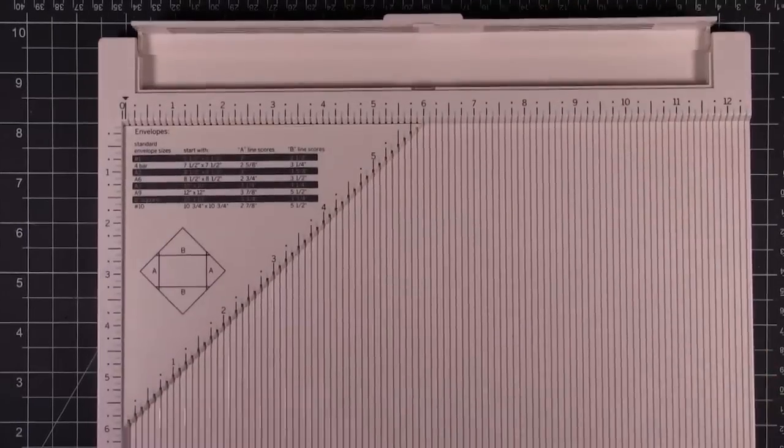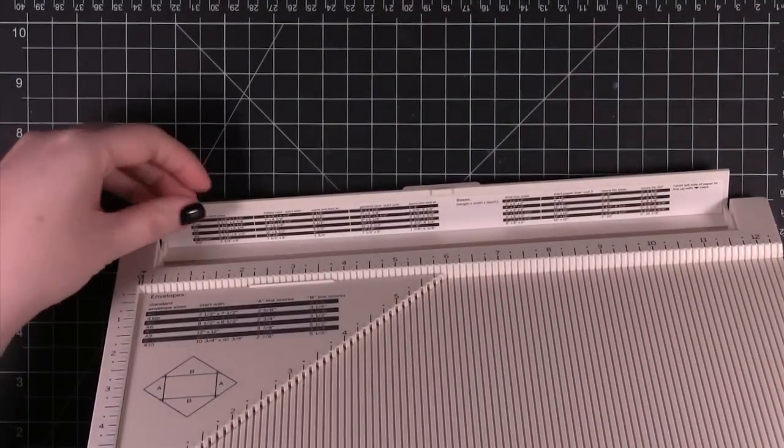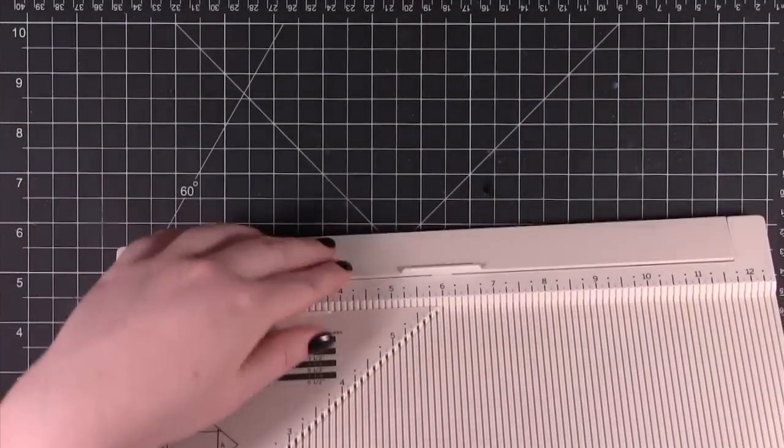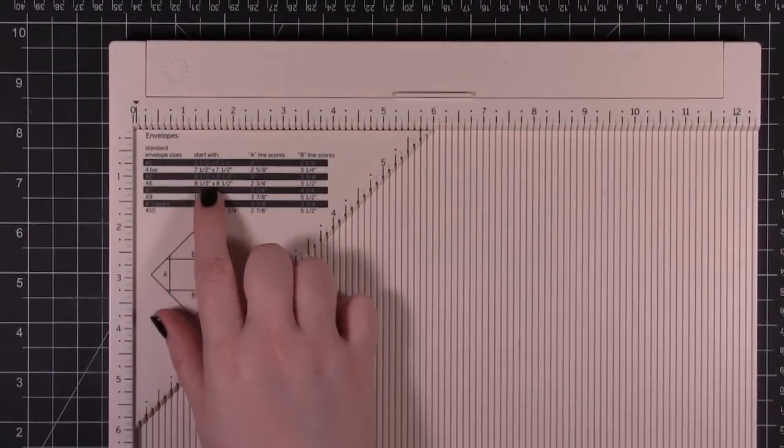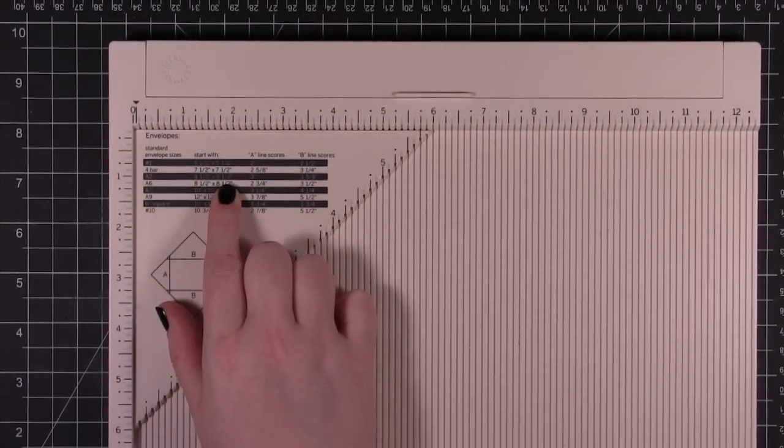If you're wondering about the card dimensions, up here at the top there's a little guide right here as well. An A2 card is your standard 4 1/4 x 5 1/2 inch card. It says right here we're going to start with 8 1/2 x 8 1/2 inch paper.